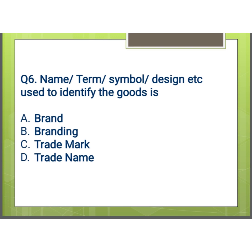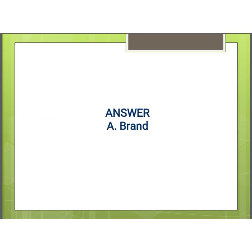Our next question is: name, term, symbol, design used to identify the goods — options are: A) brand, B) branding, C) trademark, and D) trade name. And our answer is A, that is brand.